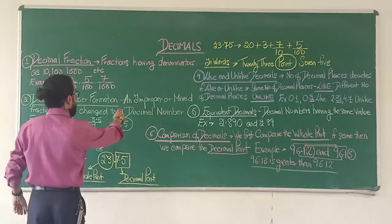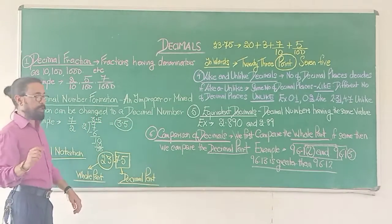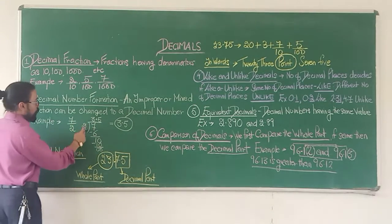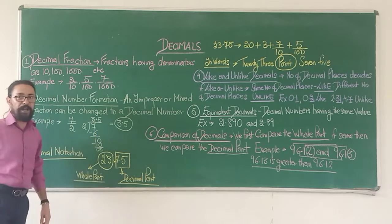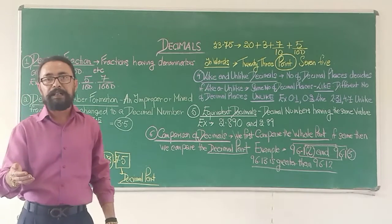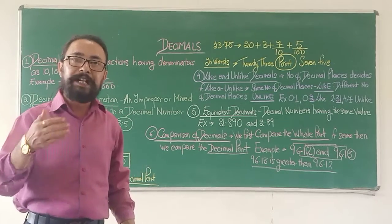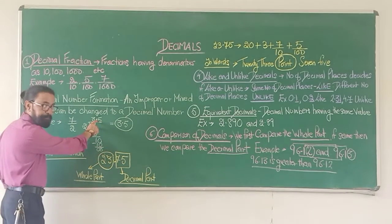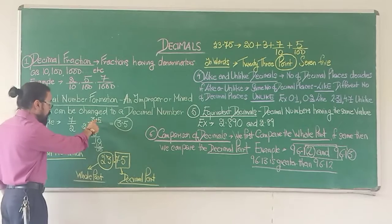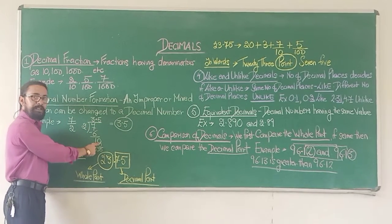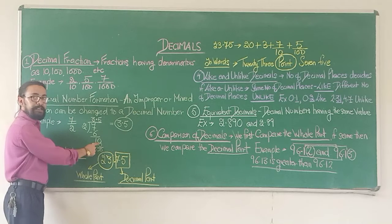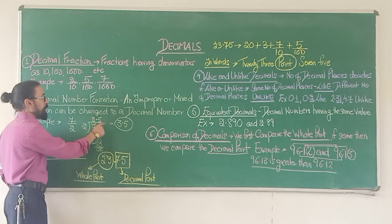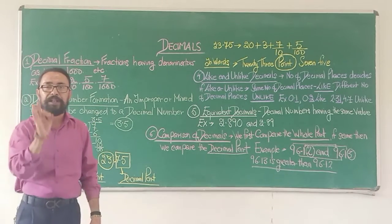I have put an example here. An improper or mixed fraction can be changed to a decimal number. I take 7 upon 2. I divide 7 by 2 — 2 goes into 7 three times, leaving a remainder of 1. Now, usually I cannot carry on my division. In order to carry on further, I need to put a decimal point. This decimal point gives me the freedom to put a 0 along with the remainder of 1 to make it 10. Now 2 goes into 10 five times, and I get a perfect decimal number: 3.5.